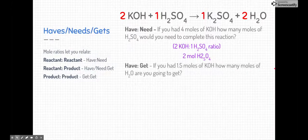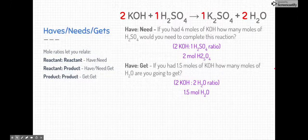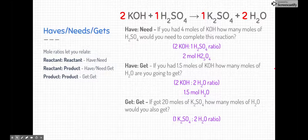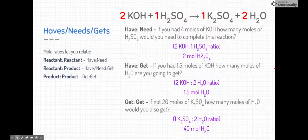What about the haves and the gets? What if we had potassium hydroxide and we wanted to know how much water we needed to get? Specifically, what if we had 1.5 moles of potassium hydroxide and we wanted to know how much water we were going to get? We know that this is a 2 to 2 ratio, or a 1 to 1 ratio at the lowest modifier. Therefore, it's 1.5 moles of water. How about the gets and the gets? What if we knew we got 20 moles of potassium sulfate? How many moles of water are we also going to get? We know that this is a 1 to 2 ratio between the two. Therefore, if we got 20 moles of potassium sulfate, we're going to get 40 moles of water.